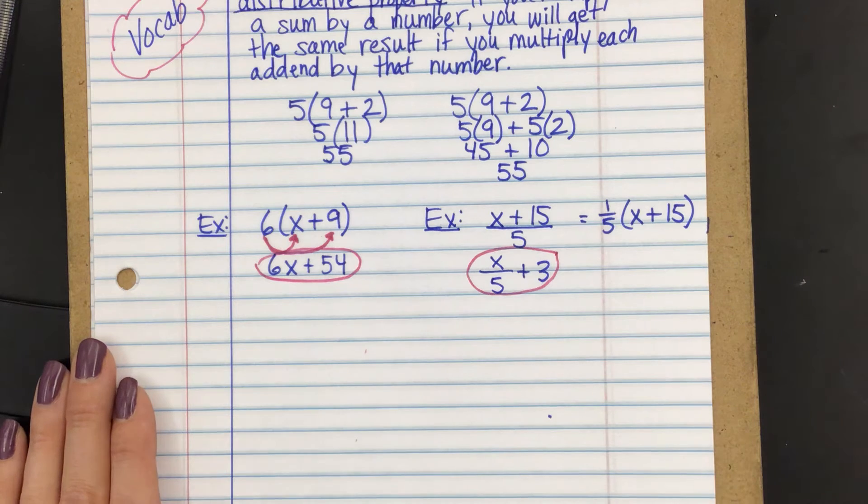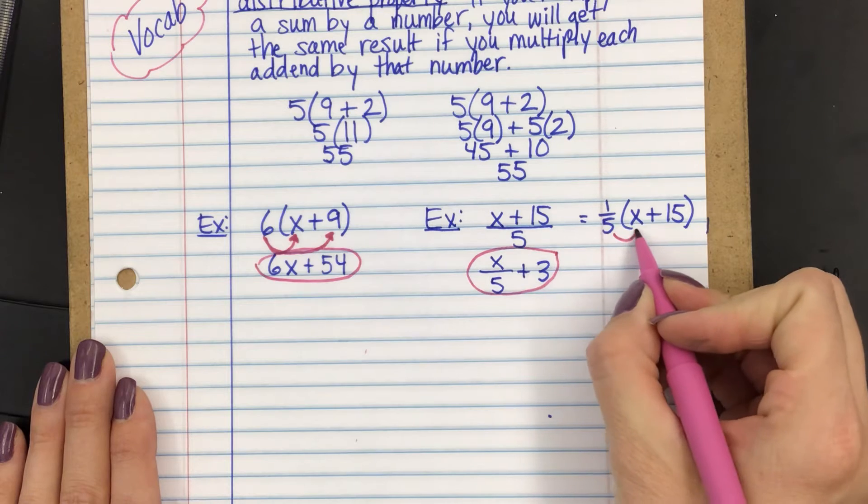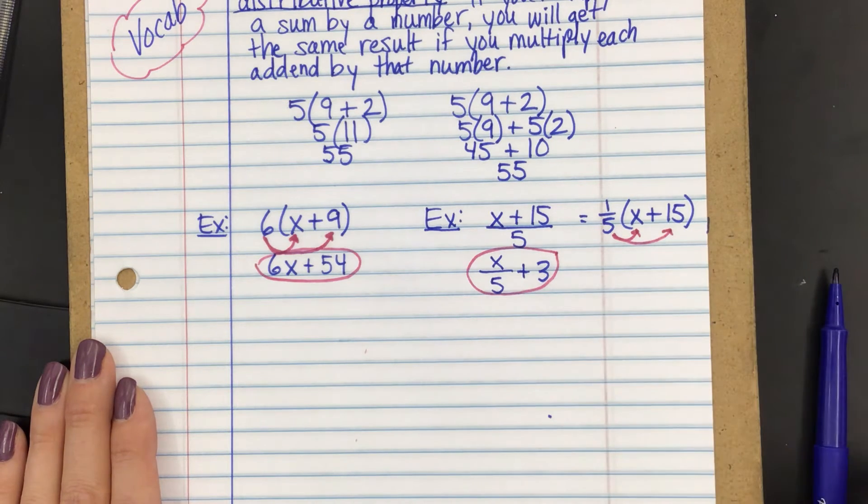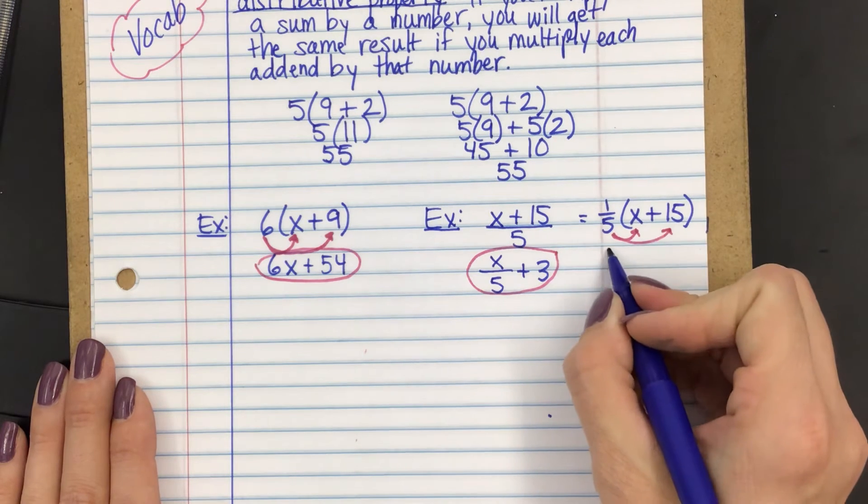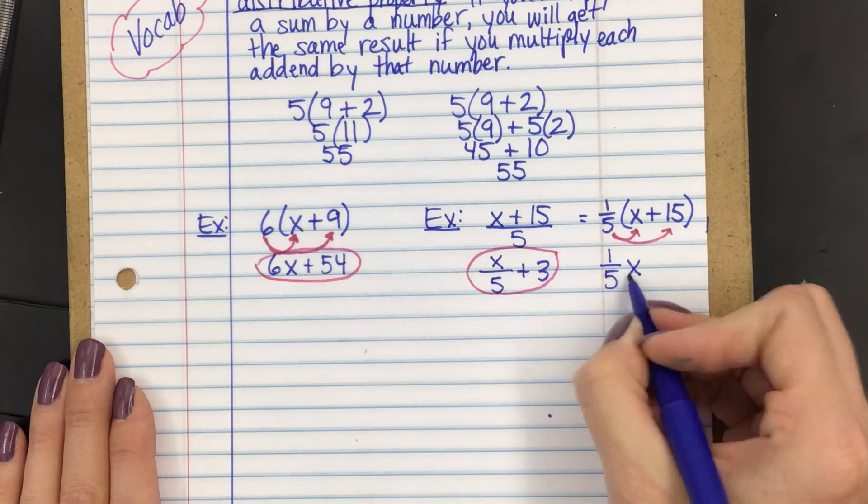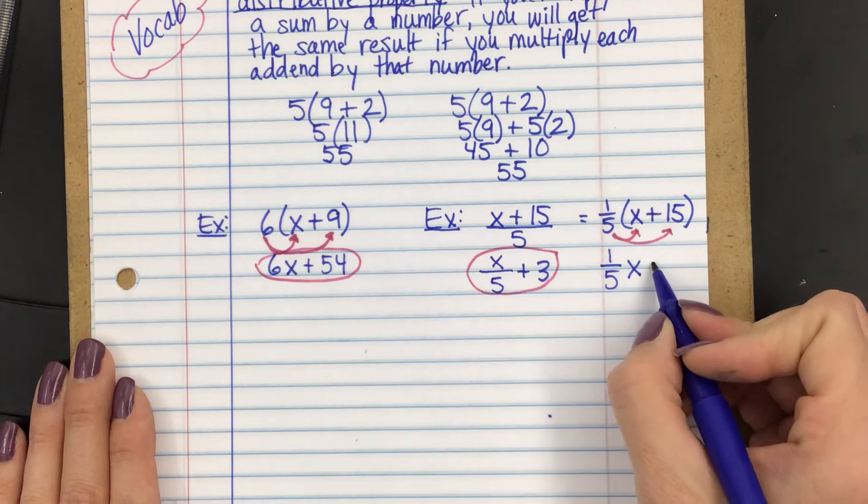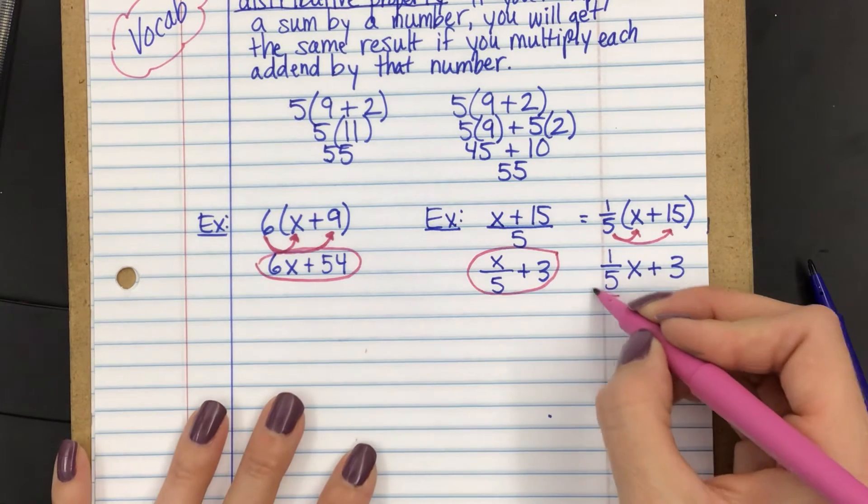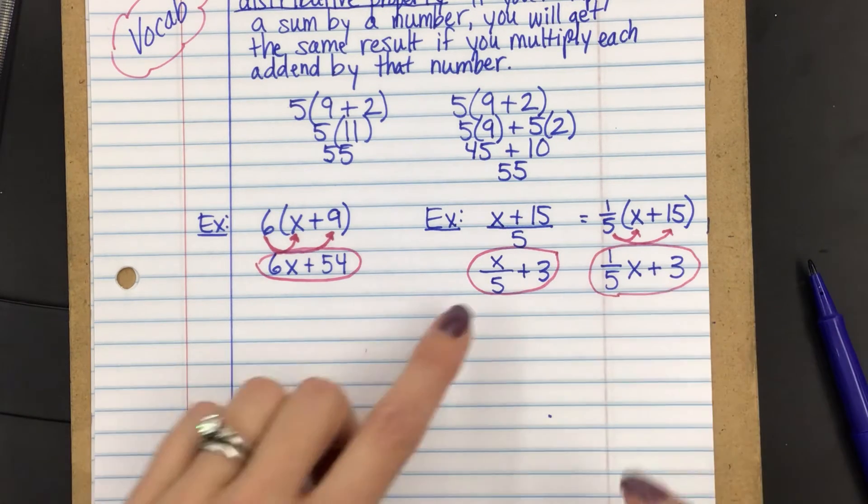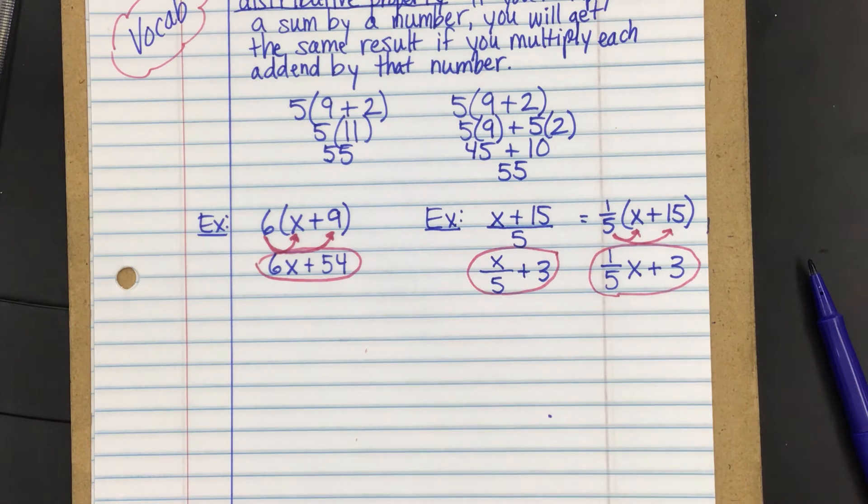Now, just for the sake of seeing it, let's distribute this one so you can see that it is the same thing. 1/5 times x is 1/5 x. 1/5 times 15 is 3. Now, it looks a little different, because in this expression, you have x divided by 5. In this expression, you have 1/5 times x. But they're the same thing. They are the same thing.